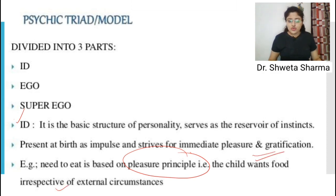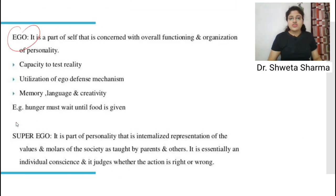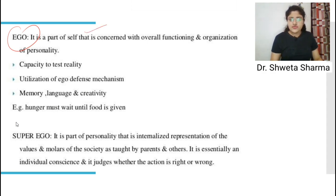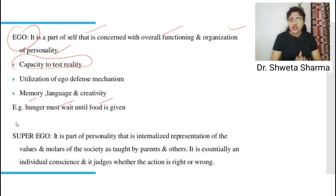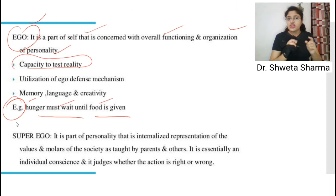The id works on the pleasure principle — for example, a child wants food irrespective of external circumstances; if it needs to eat, it needs to eat. The ego is the part of the self concerned with the overall functioning and organization of personality, working on a reality basis — using memory, language, and creativity. For example, hunger must wait until food is given.